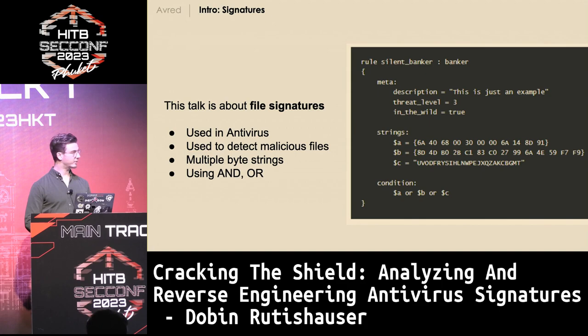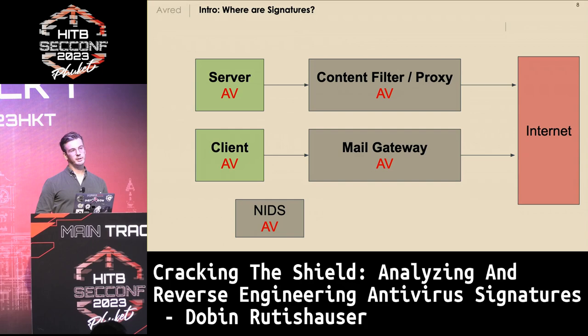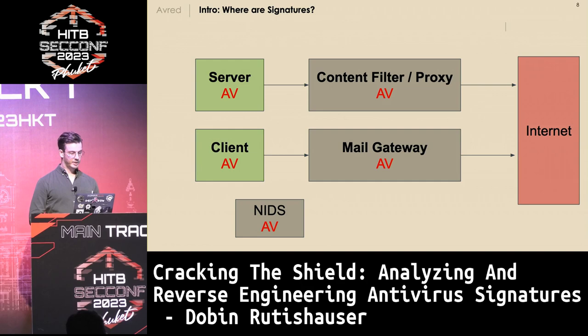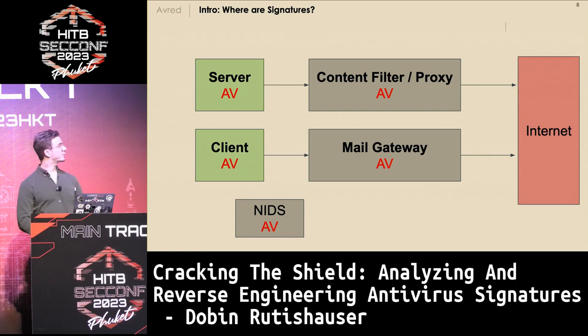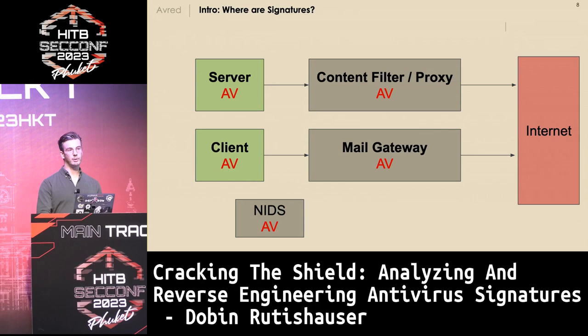Signatures usually look like some byte strings, things which are concatenated with AND or OR conditions. Antivirus are widely used nowadays — they can be on servers, on clients, usually also on the mail gateway, on the content filter side, and maybe even integrated in the NIDS. They can be from different vendors like Sophos and Defender, depending on where you are, and they can be blocking or non-blocking.